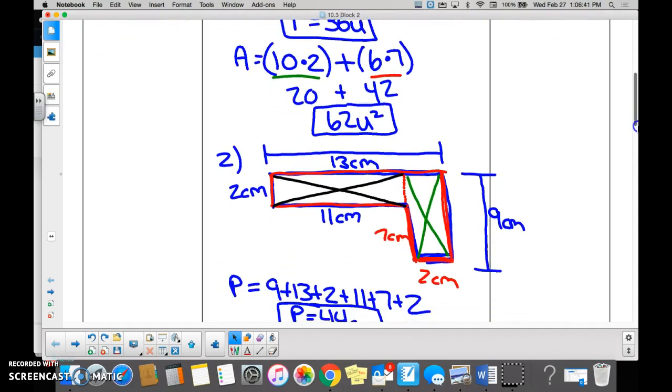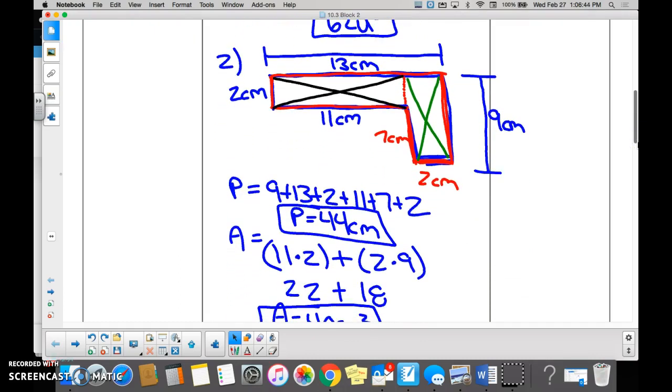Okay, number two, same issue. Do you see how we chunked this shape? Everyone see how we chunked it? We have our green X right here, and we have our black X right here.